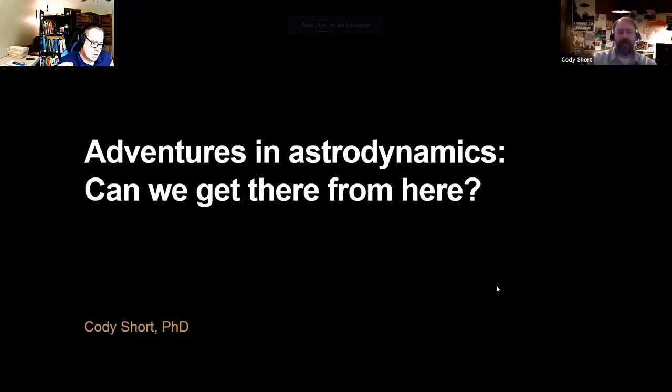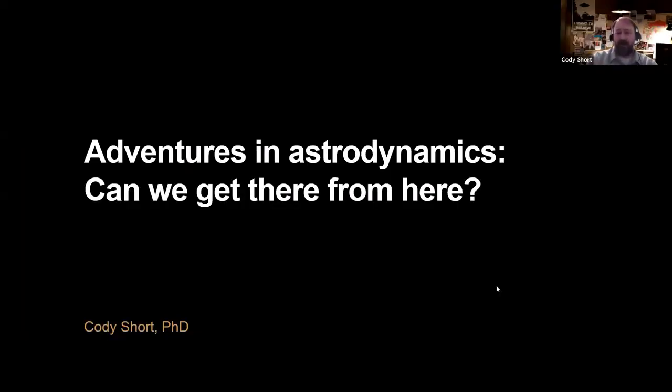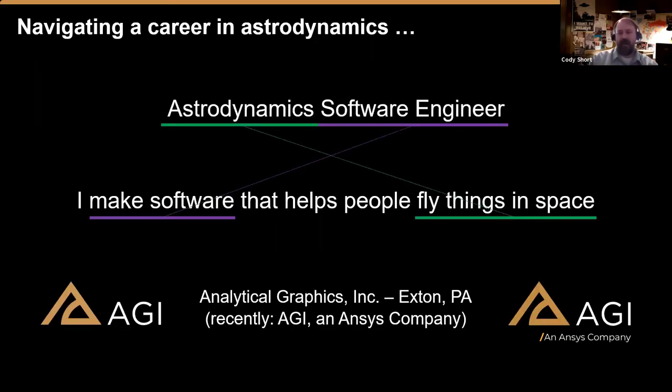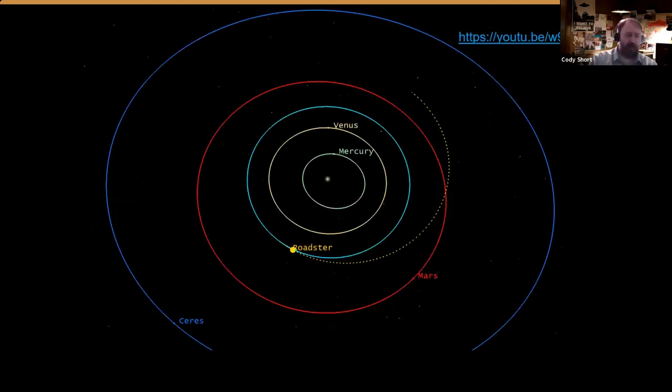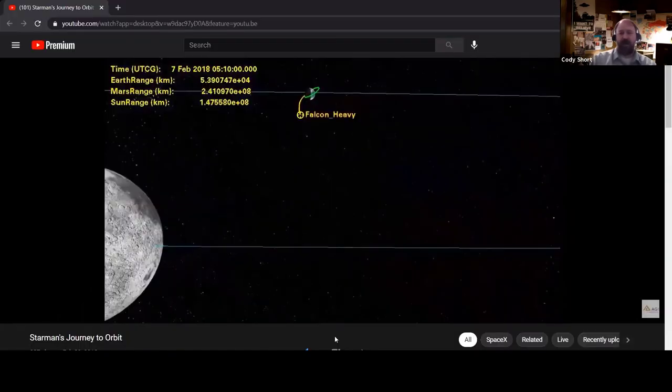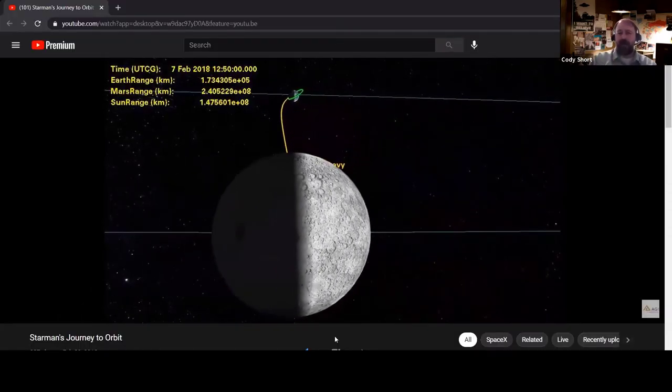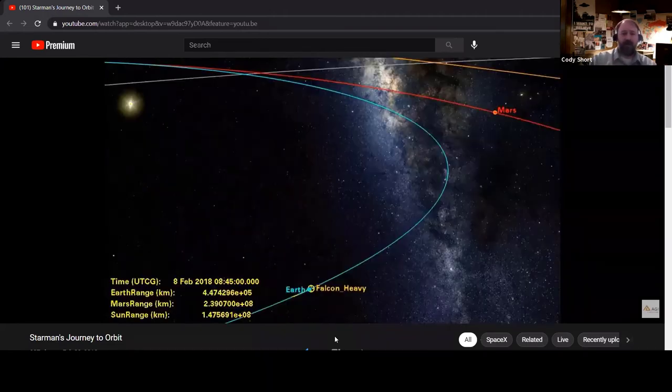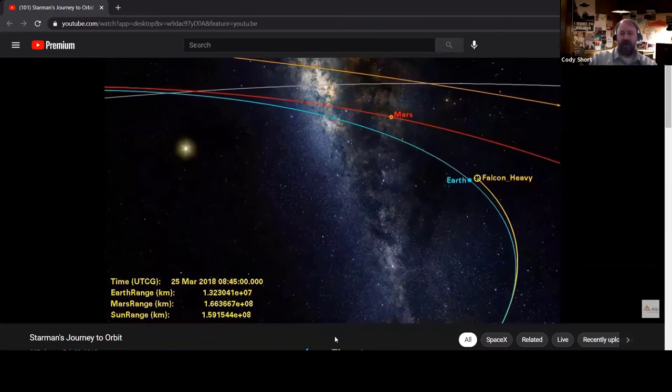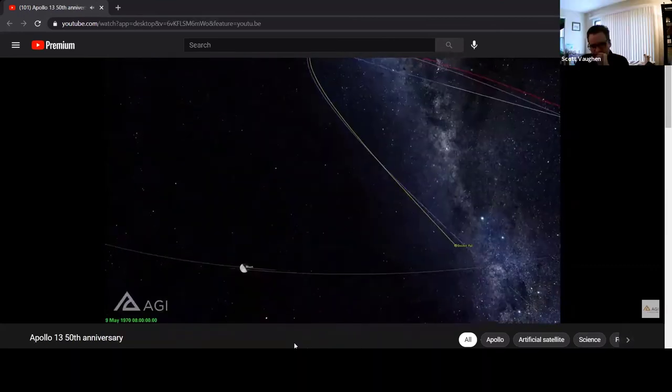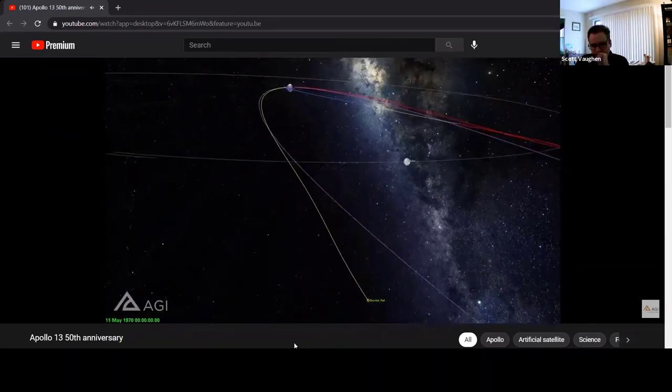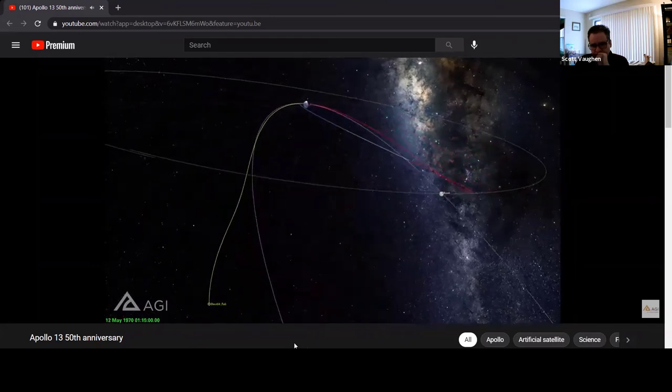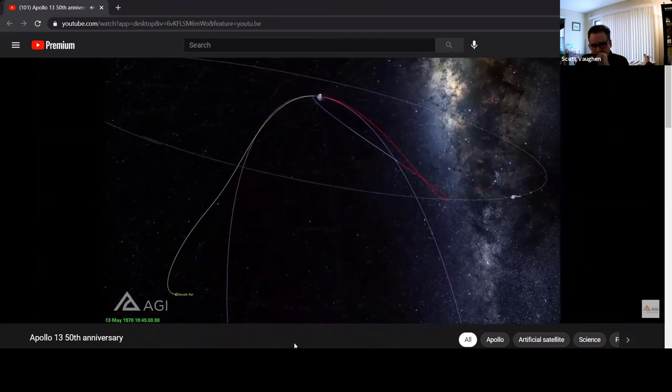Next, we heard from Cody Short, an astrodynamics software engineer at Analytic Graphics Incorporated whose company analyzes spacecraft trajectories and orbits and whose work is used by NASA and private space companies in mission planning and analysis. He talked to us about the mathematics of modeling orbits and the work of an astrodynamics engineer and the path he followed to that career and how others could do the same. Thank you, Cody, for the fascinating tour of your work. It was brilliant.